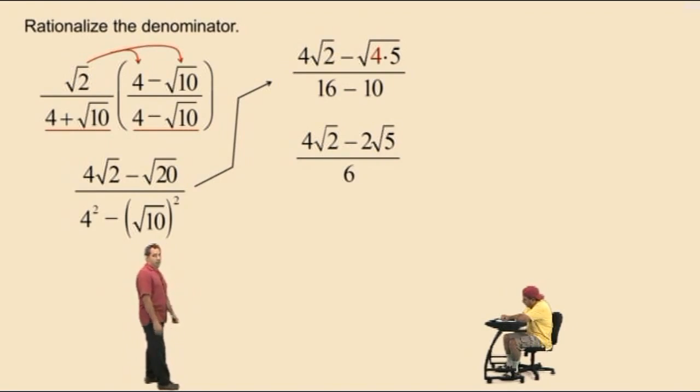Now, we're not done because that numerator there has a greatest common factor. Now, Charlie, what is the greatest common factor of that numerator? 2. That's right.